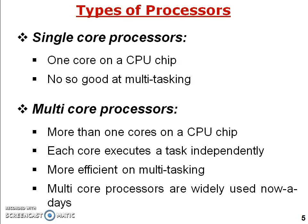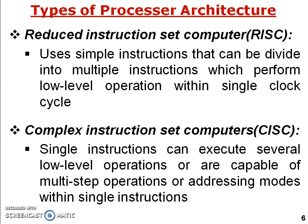The drawbacks of single-core processors are improved in the multi-core processor, which contains more than one core on a single chip. Each core executes tasks independently, which is why it supports multitasking — each core handles one task, so multiple tasks can be performed in a single amount of time. Multi-core processors are widely used nowadays.